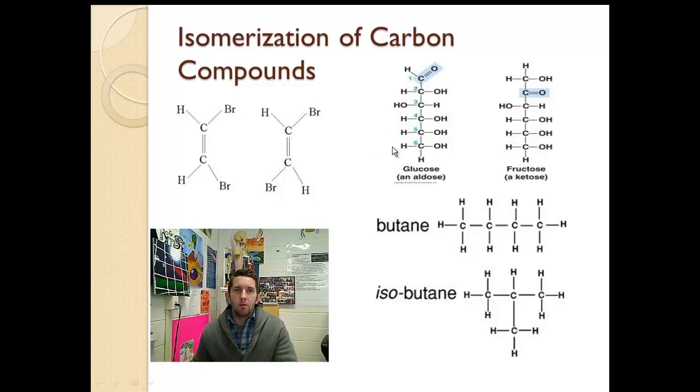Carbon, because it can take on many different shapes, forms many different isomers. So different carbon compounds have different isomers. And what an isomer is, is it's a chemical compound that has the same number of elements, number of atoms, but a different structure. So you can see here, if we count the atoms, there are two carbons, two hydrogens, and two bromines.